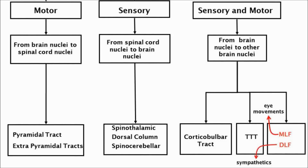The last two tracts are often not considered, but I will include them here for completion and because I believe they are both clinically important. The first is called the MLF, short for the medial longitudinal fasciculus, and it is mainly involved in the synchronised movement of the eyes, allowing you to follow objects or for reading. The second pathway is called the DLF — the dorsal longitudinal fasciculus — and it consists of descending fibres coming from the hypothalamus that are associated with the sympathetic nervous system.